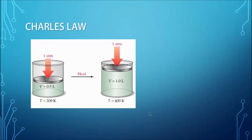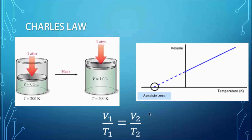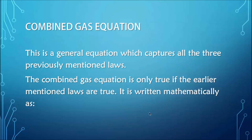And that's exactly what we see in this case. Here we have a graph illustrating this — temperature increases, volume increases, in a directly proportional relationship. We can write the formula as V1 over T1 equals V2 over T2, where V1 and T1 are the initial volume and temperature, and V2 and T2 are the final volume and temperature.